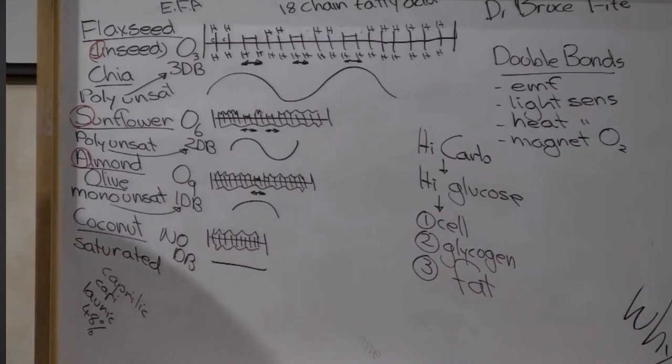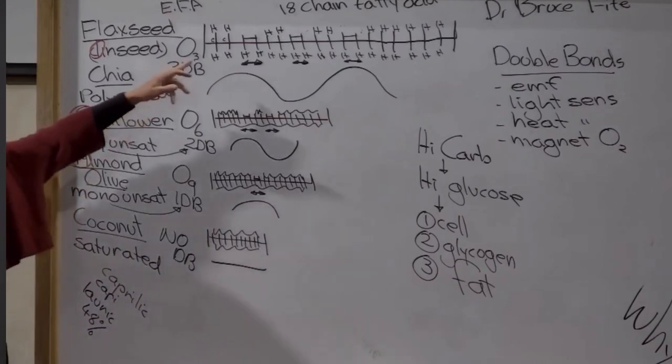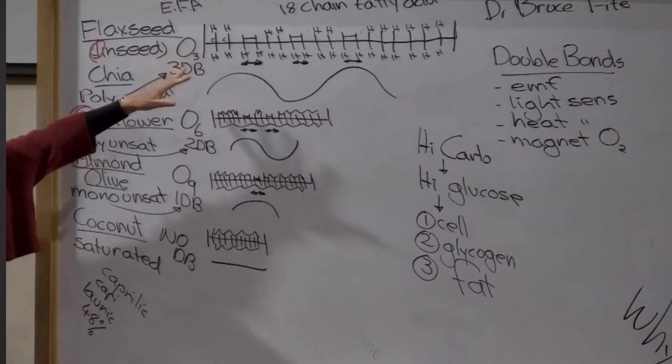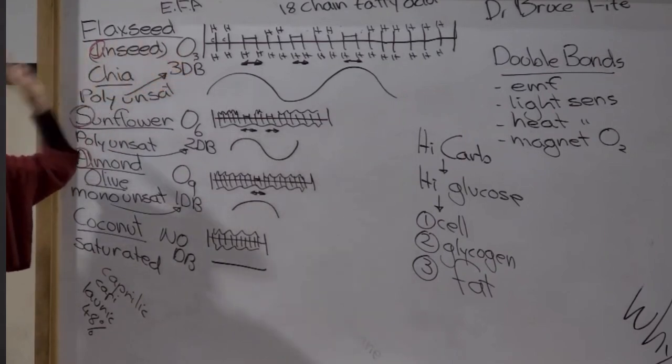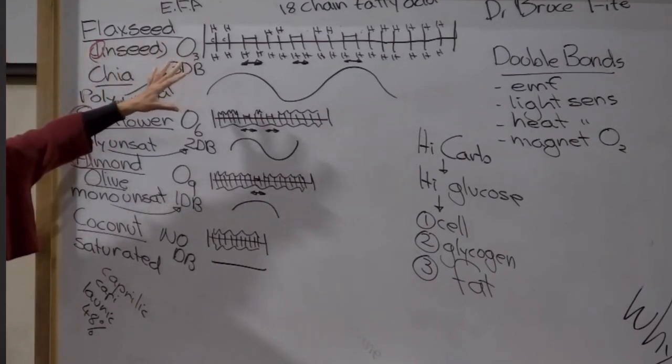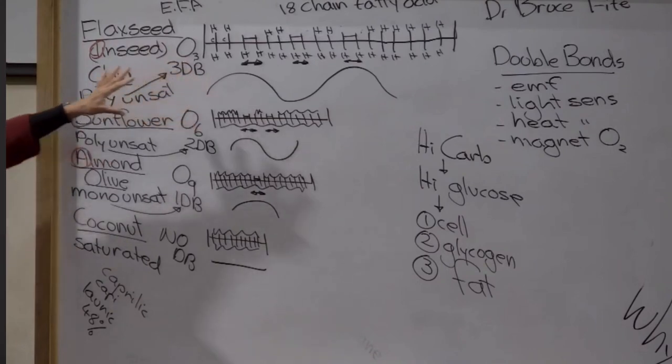The other dangerous fat is altered fat. So this is your fried foods, but also margarine. Let me show you how they make margarine. Let's say they're going to make margarine out of flaxseed. Well, we've got a problem. It's liquid. So they saturate it with hydrogen ions. To do that they have to use a catalyst.